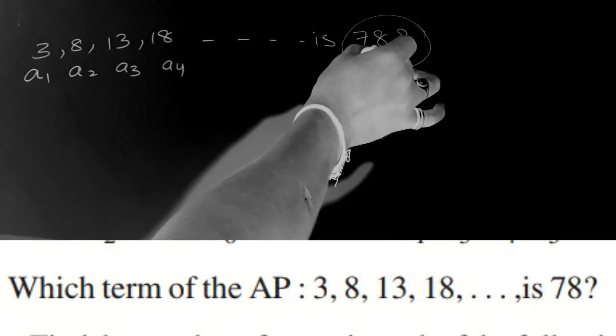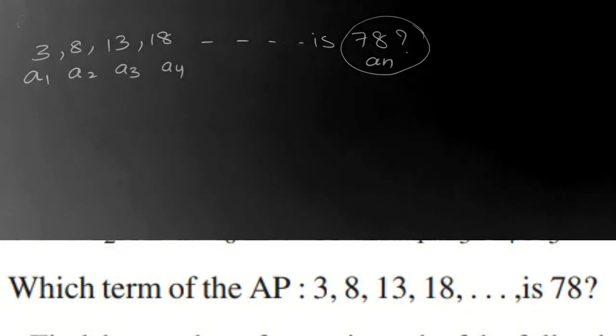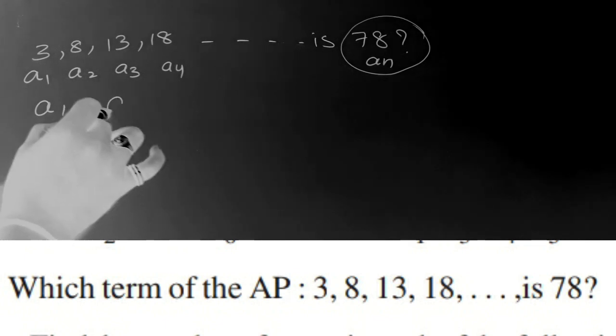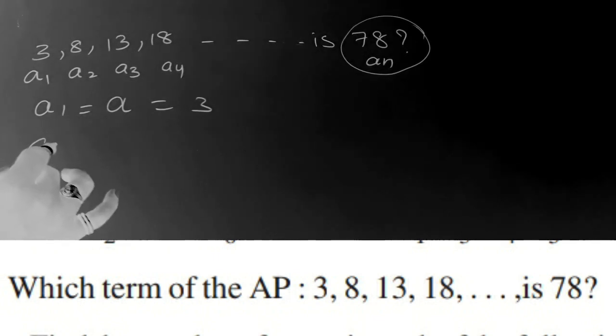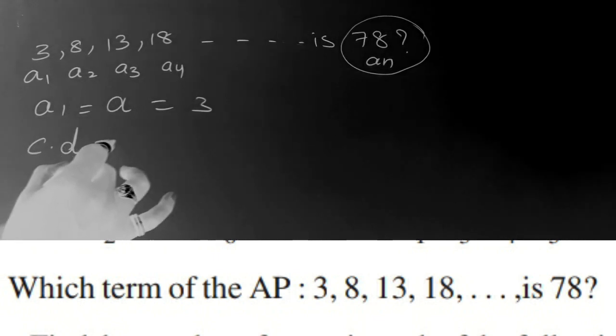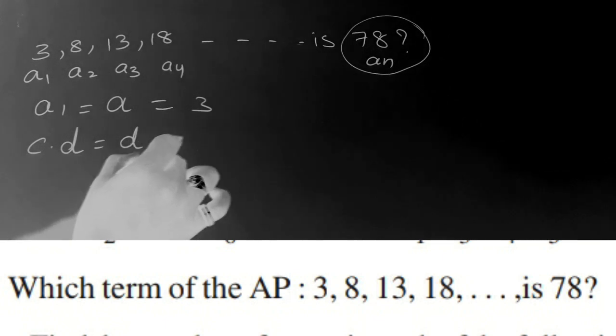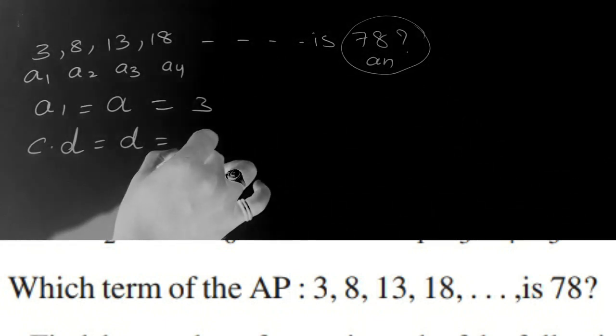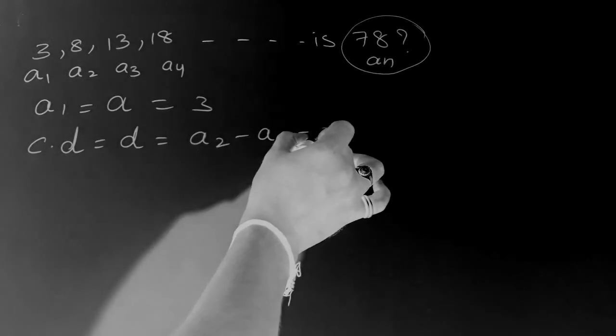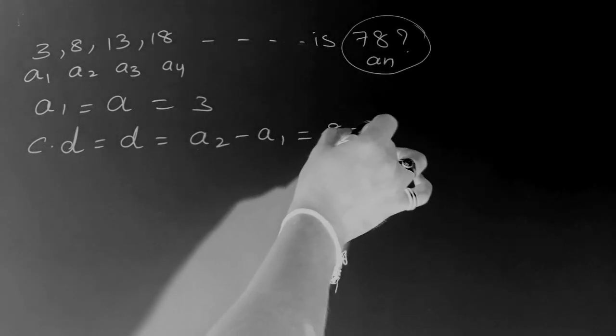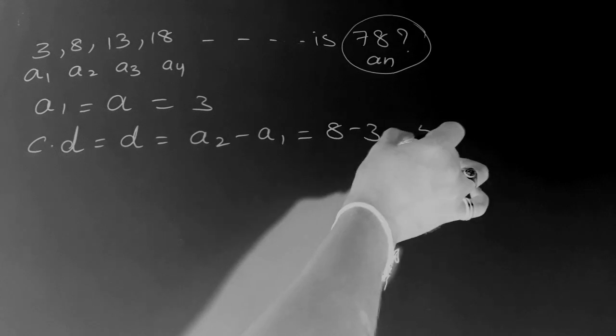Now we have to find 78 is which term, an. So here a1, the first term a, is equal to 3. Next you find the common difference, so that is d is equal to t2 minus t1, so a2 minus a1, second term minus first term, 8 minus 3, that is 5.